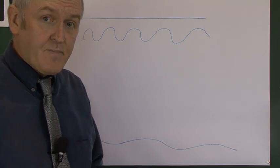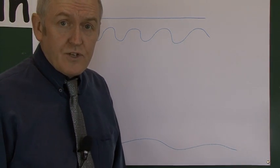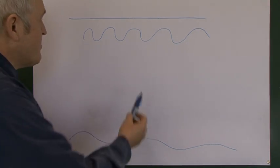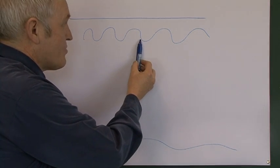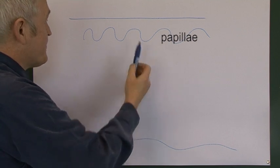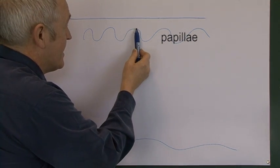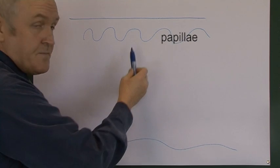But just thinking about the overall structure first of all, the dermal papillae rise up into the epidermis. So this is a papillae here going up into the epidermis, and for this reason the top layer of the dermis is described as the papillary region of the dermis.